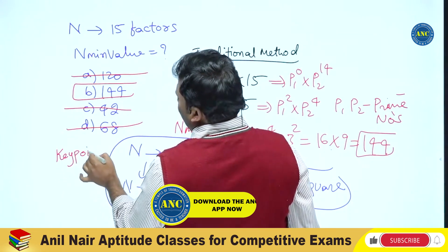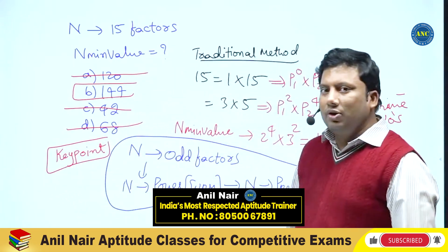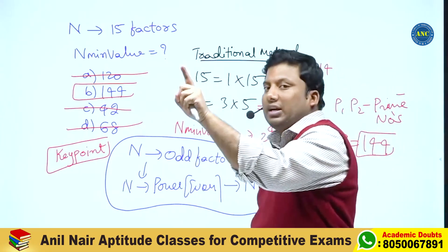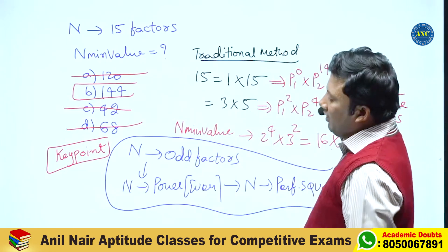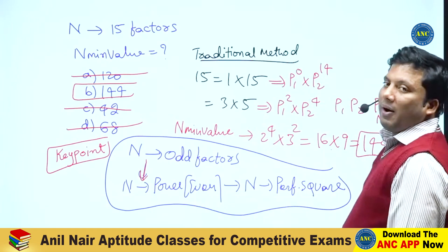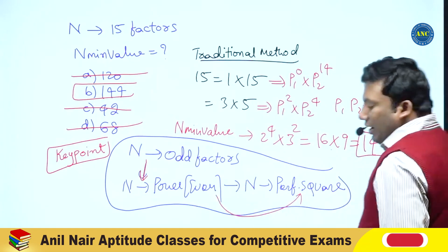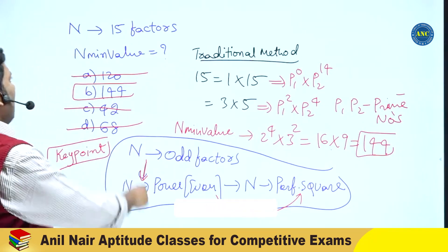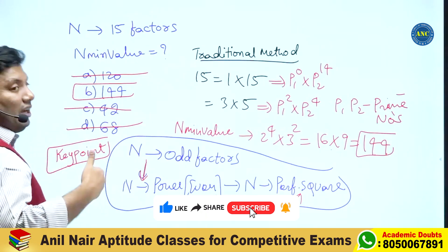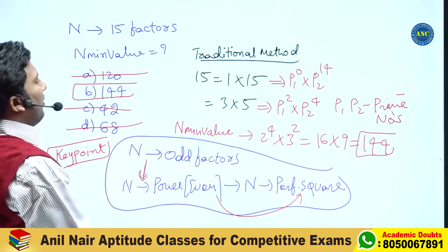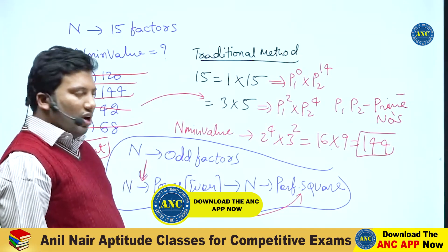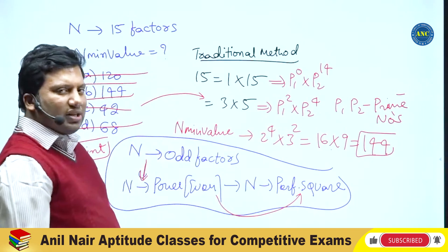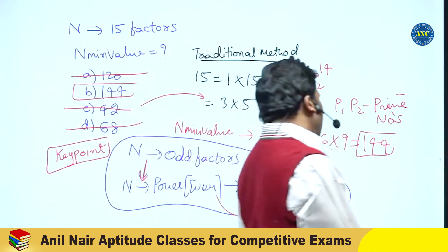Very important key point — please write this down. If the number of factors is odd, then (a+1) is odd, so a is even. Since a is the power and it is even, the number is a perfect square. If the number of factors are odd, the answer should be a perfect square. If more than one answer option is a perfect square, then go back to the detailed logic: 2 power 4 × 3 squared. The digital sum should be 9 and the answer should be divisible by 4.